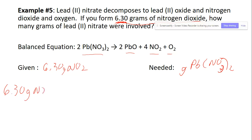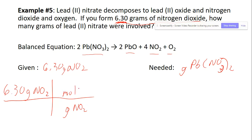Starting with 6.30 grams of NO₂, we're going grams to grams, so we use the periodic table first. Going from grams of NO₂ to moles of NO₂: nitrogen is 14, oxygen is 16 times 2 which is 32, giving 46 grams of NO₂ per one mole.